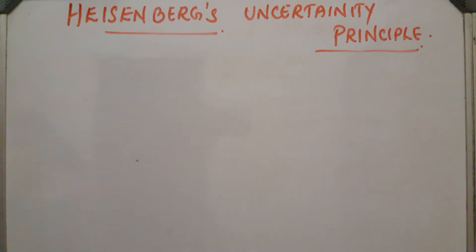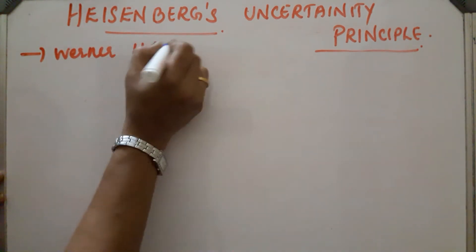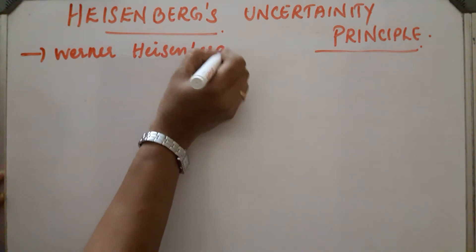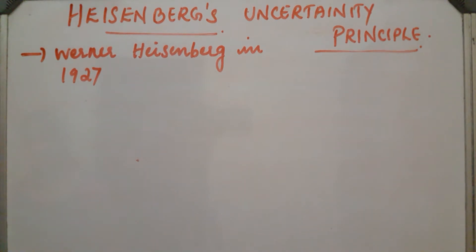Heisenberg's Uncertainty Principle. Werner Heisenberg in 1927 stated the Uncertainty Principle, which is the consequence of the dual character of matter. It states that it is impossible to determine simultaneously the exact position and exact momentum of a microscopic moving particle like an electron.